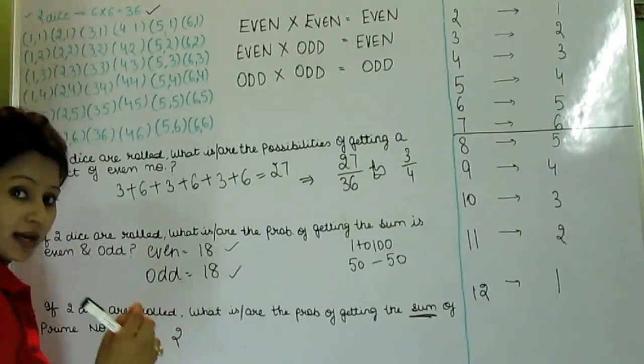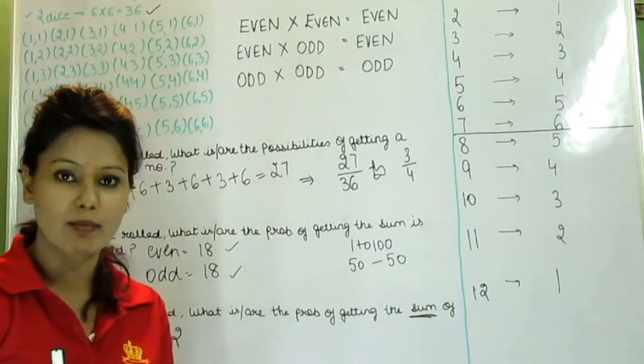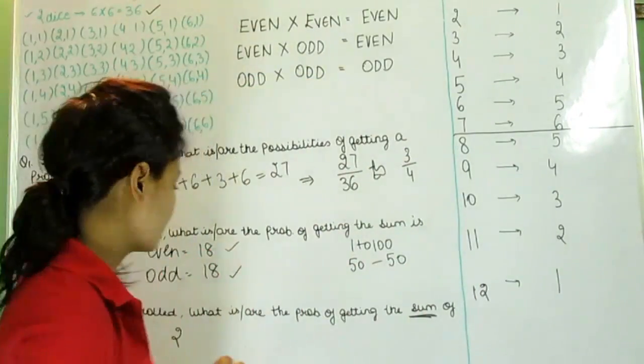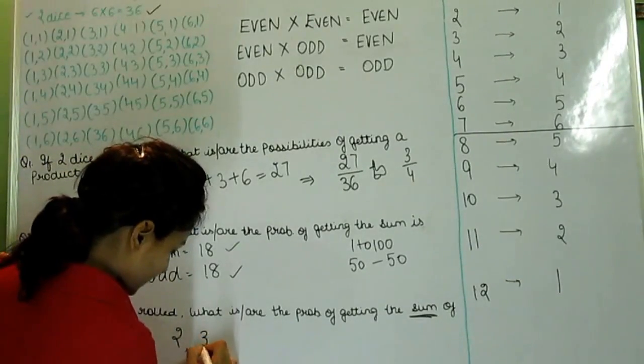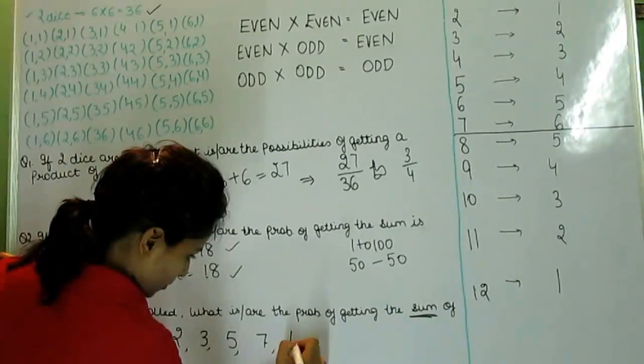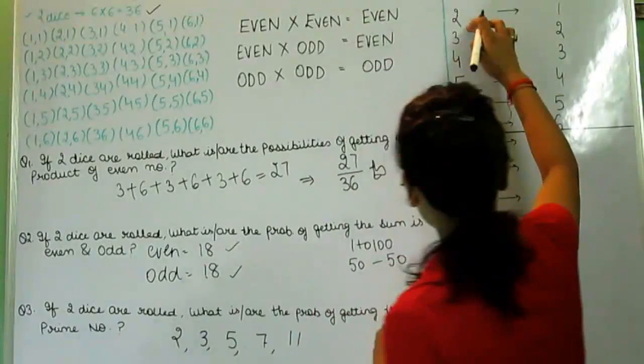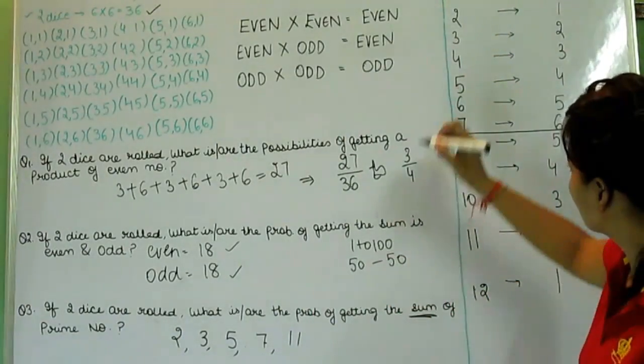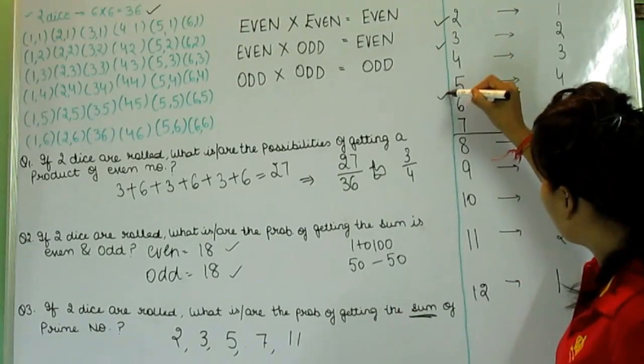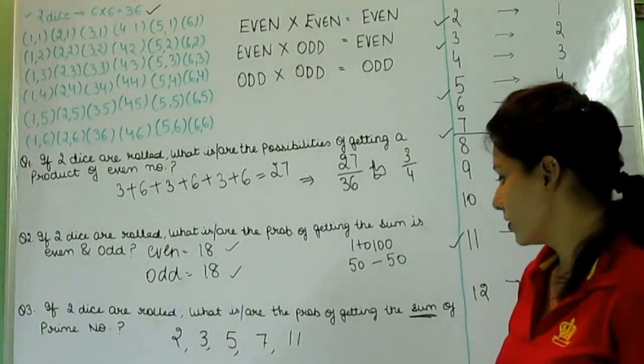Two is a prime number. Sorry, one is not a prime number. Just two, three, five, seven. Just till 12 we have 2, 3, 5, 7 and 11. We have 5 prime numbers.